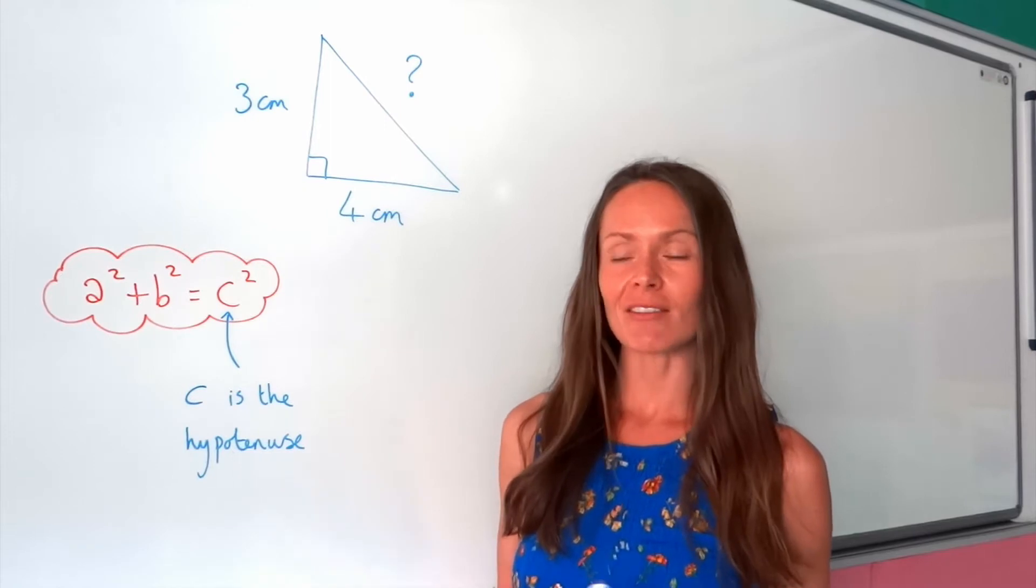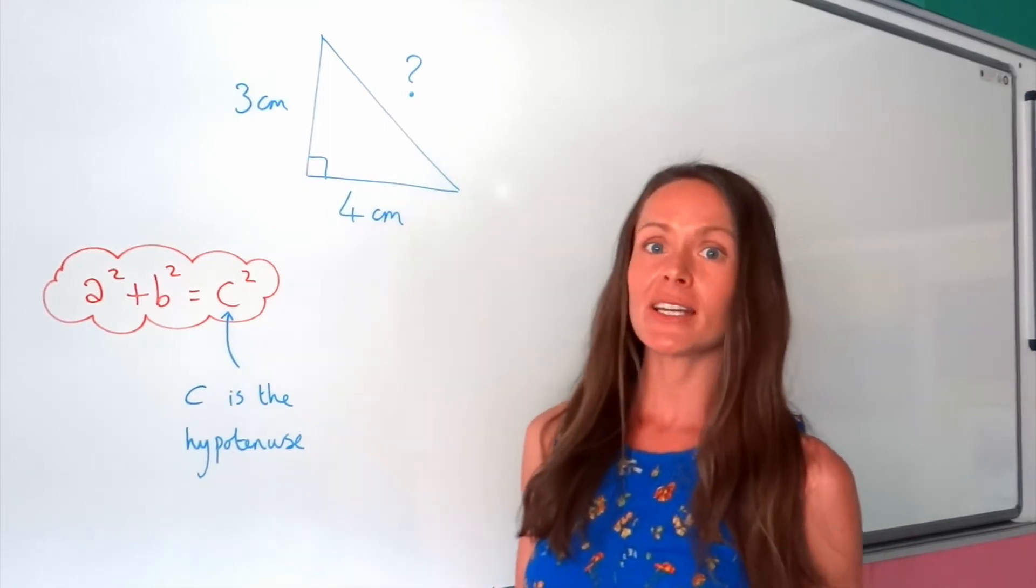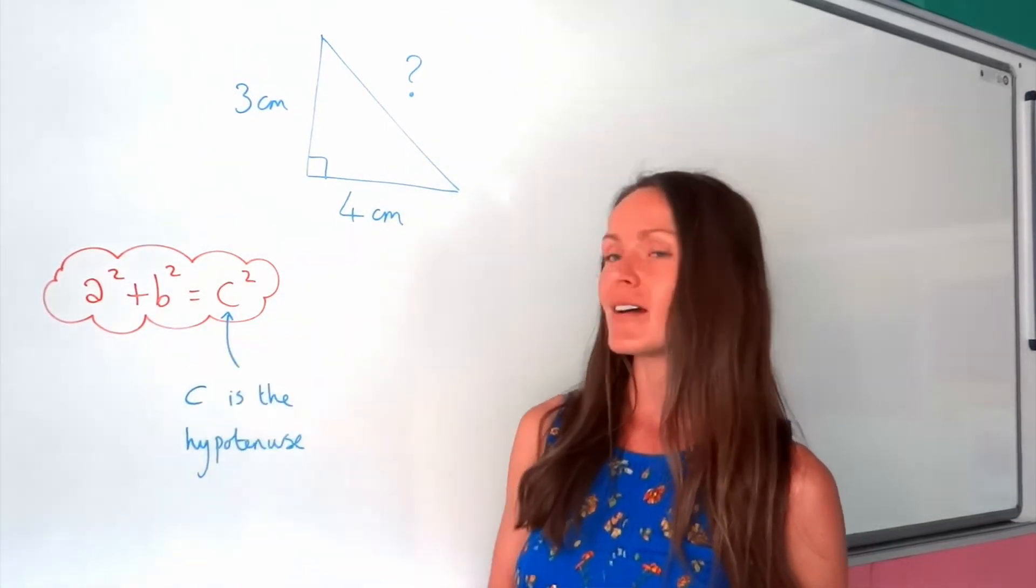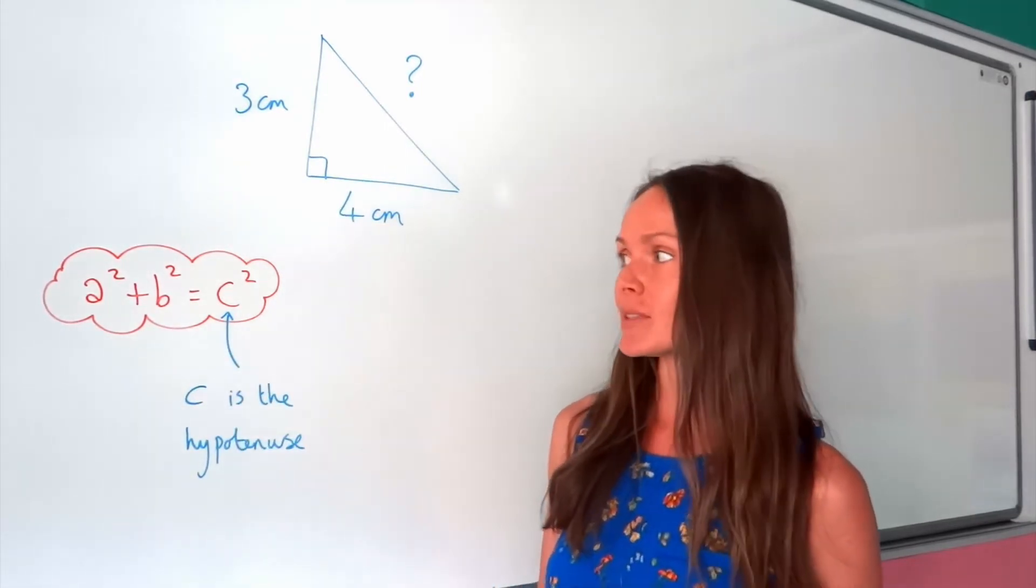Hey guys, today I'm going to show you Pythagoras. Pythagoras was actually a really important philosopher, a Greek philosopher, who discovered this formula here, a squared plus b squared equals c squared.